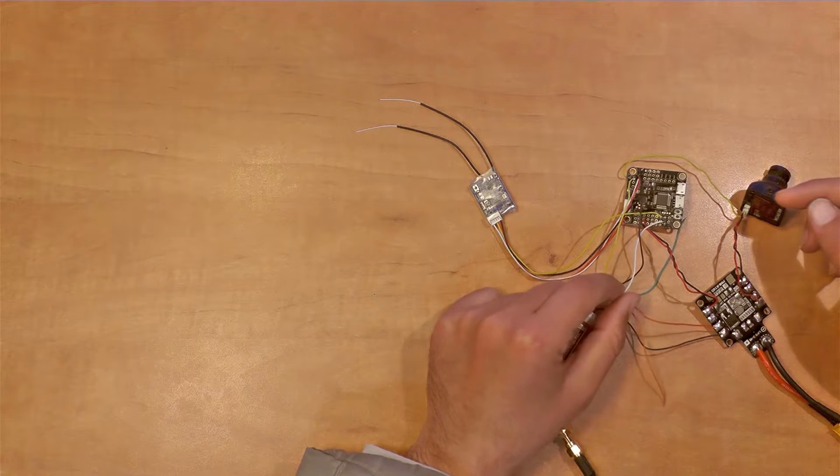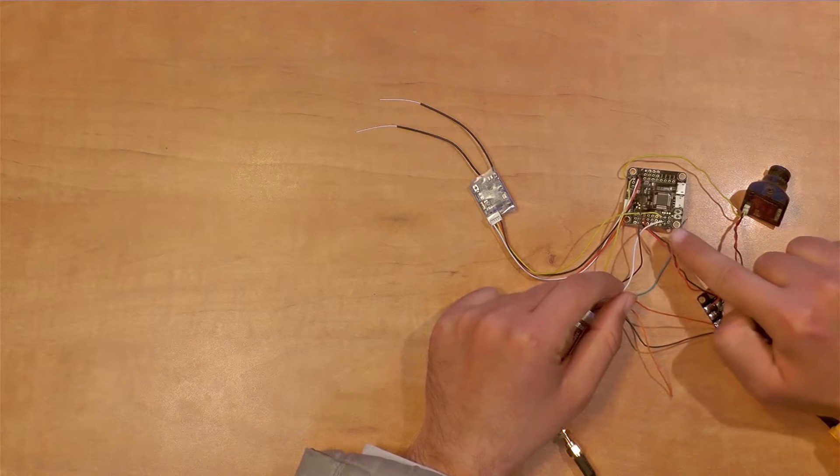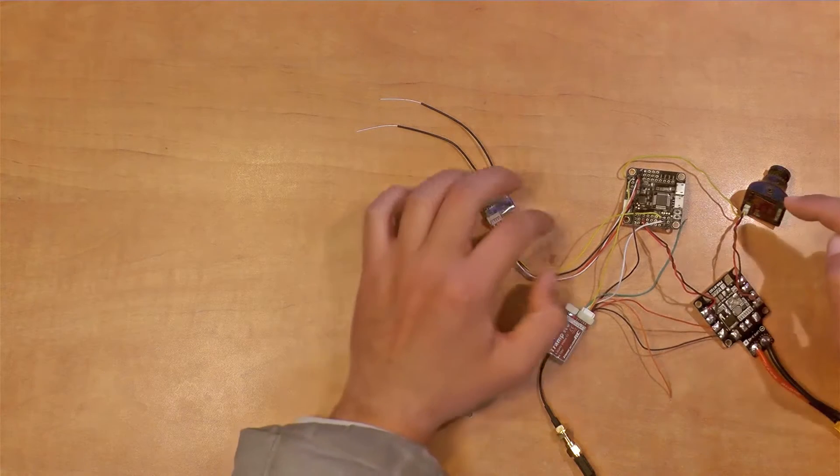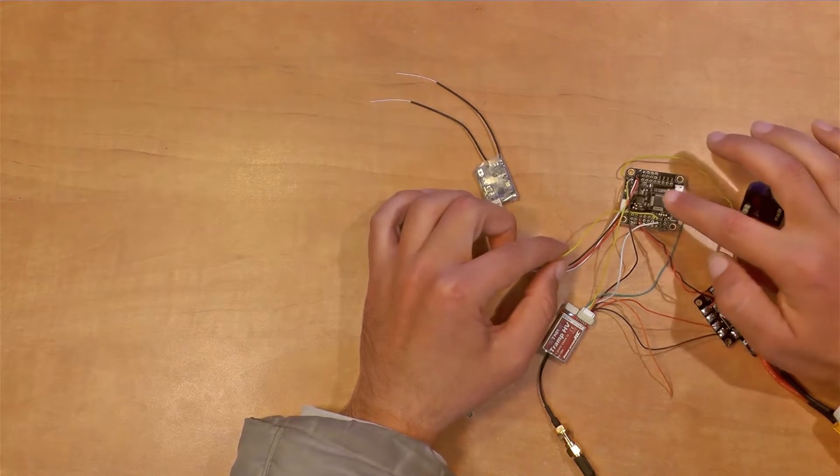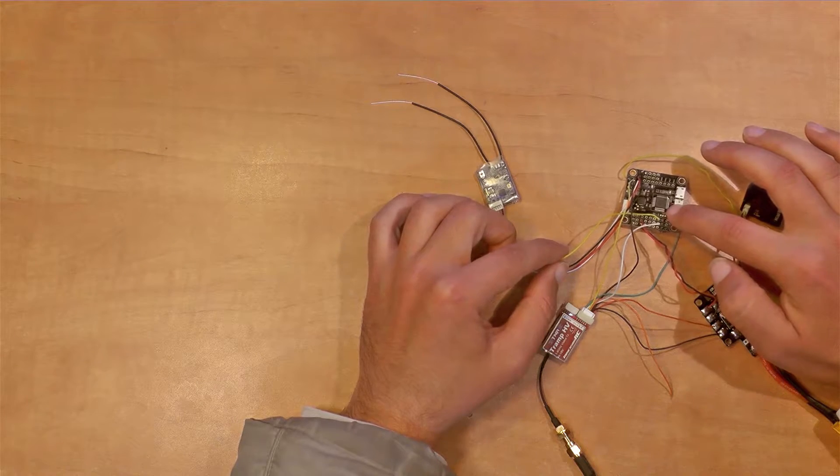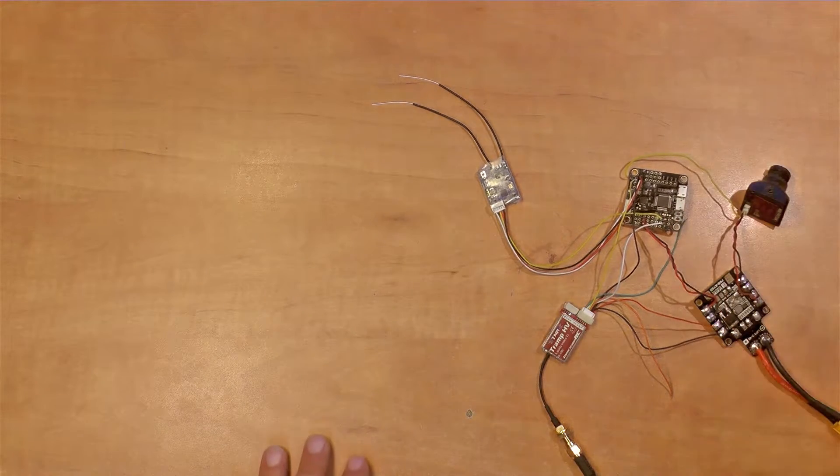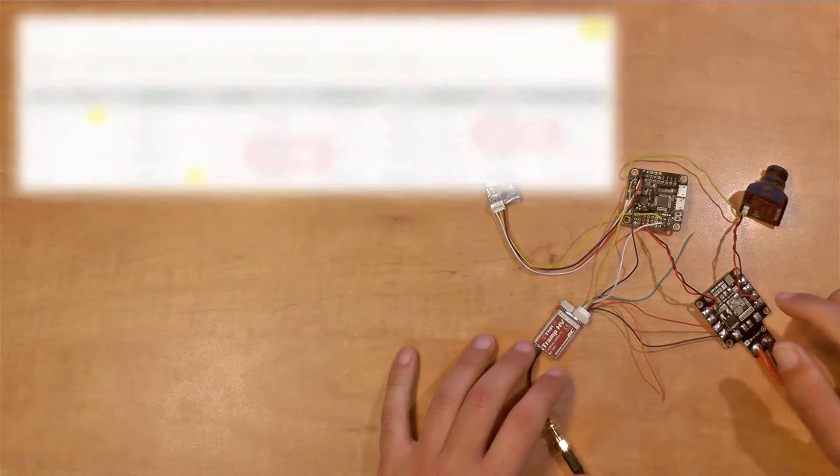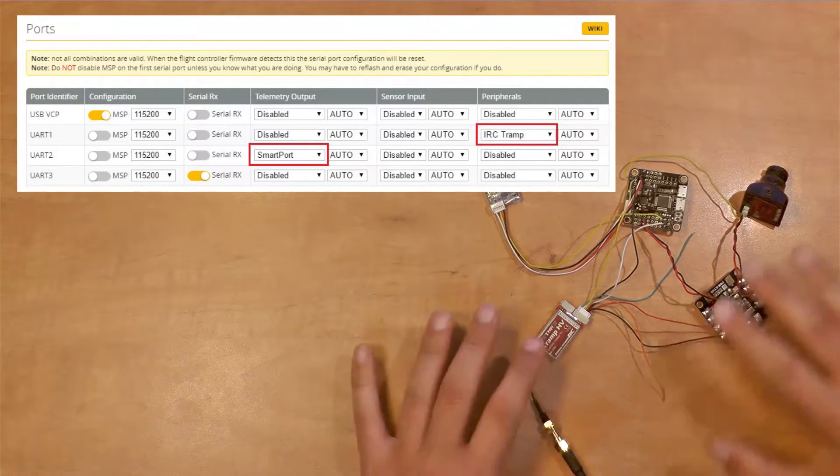The Trump T telemetry is connected to UART X1, the S port output connected to UART X2. And obviously in the ports tab in Betaflight configurator it's defined accordingly.